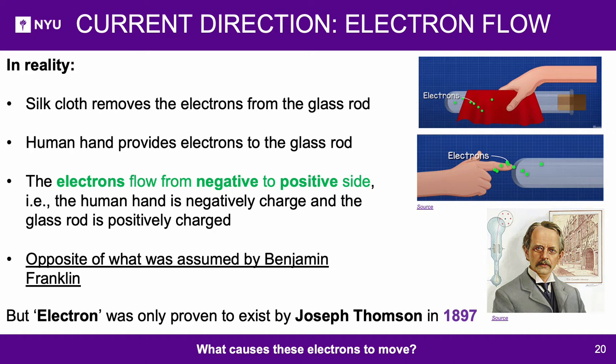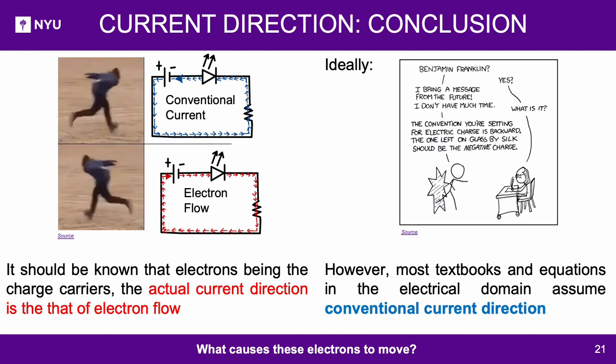Moreover, the formulas used in any electrical domain work regardless of the direction assumed. Conclusion: It is good to know that the scientifically correct direction of current is from the negative terminal to the positive terminal, since that is how electrons flow in a circuit. However, in most textbooks and electrical derivations, the conventional current direction is assumed.